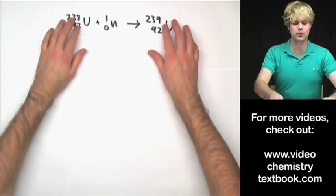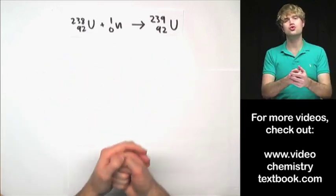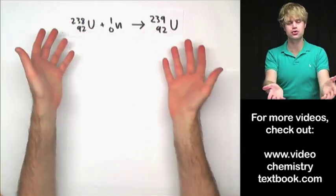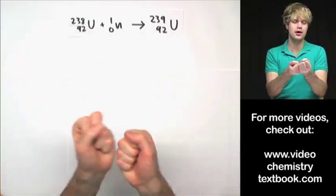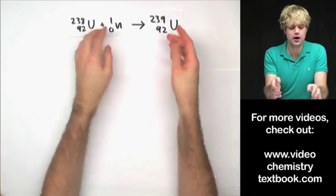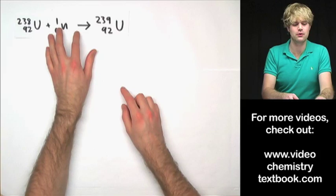In this example, we take Uranium-238 and we add a neutron to it. Bombard that neutron in. It's not particularly hard because neutrons have a neutral charge, so they're not going to be repelled by that uranium atom. We add the neutron and we get an atom now of Uranium-239.